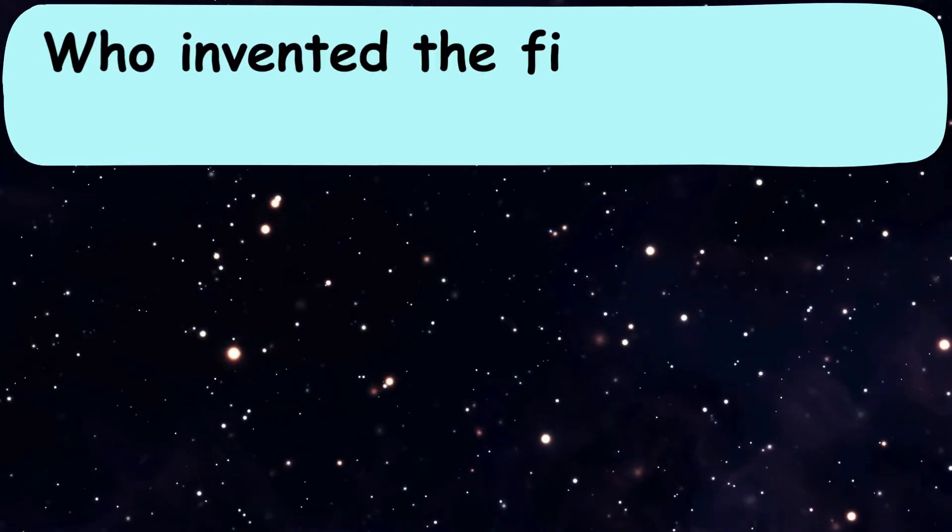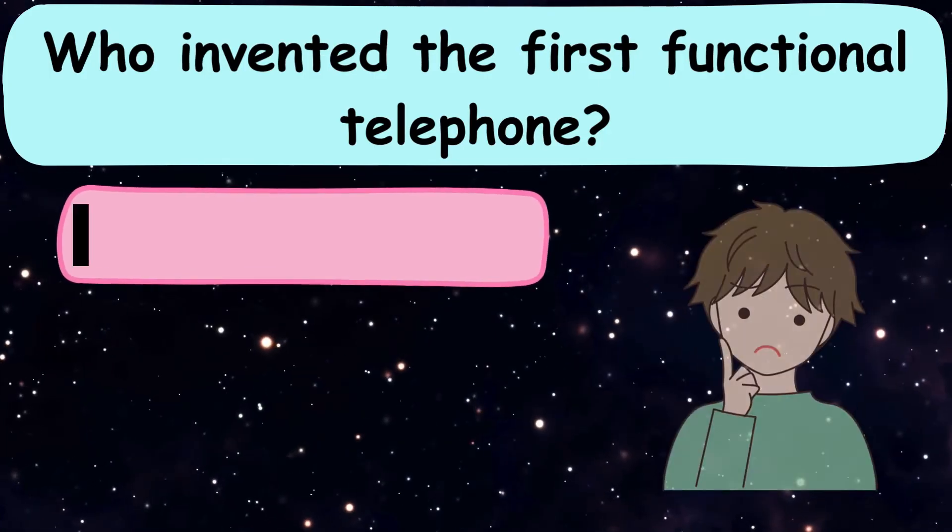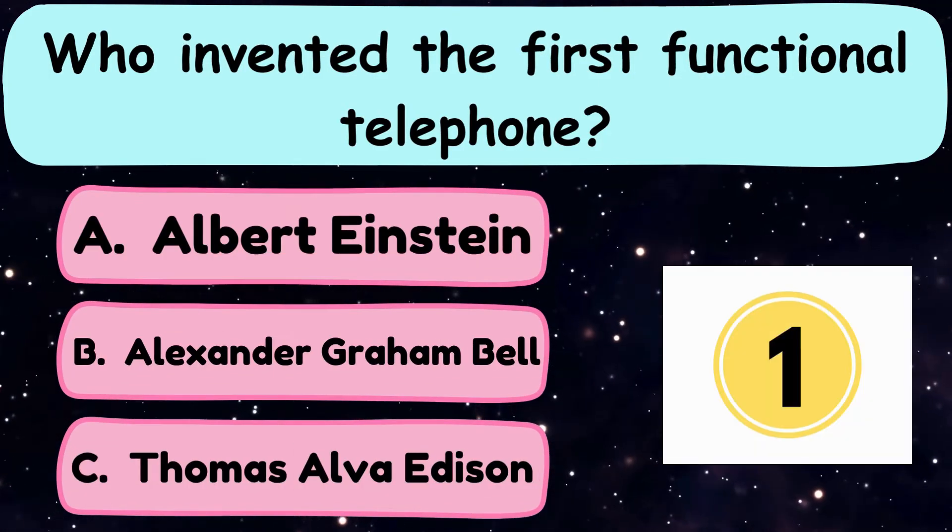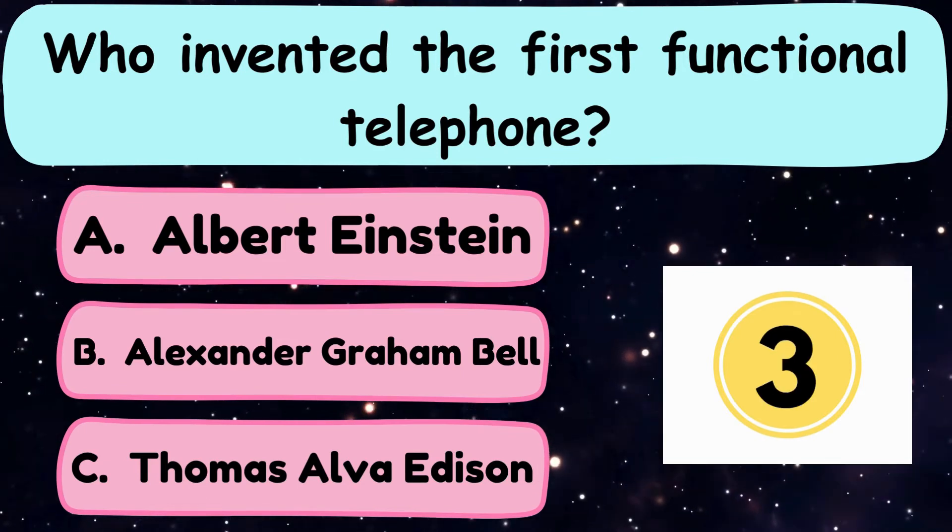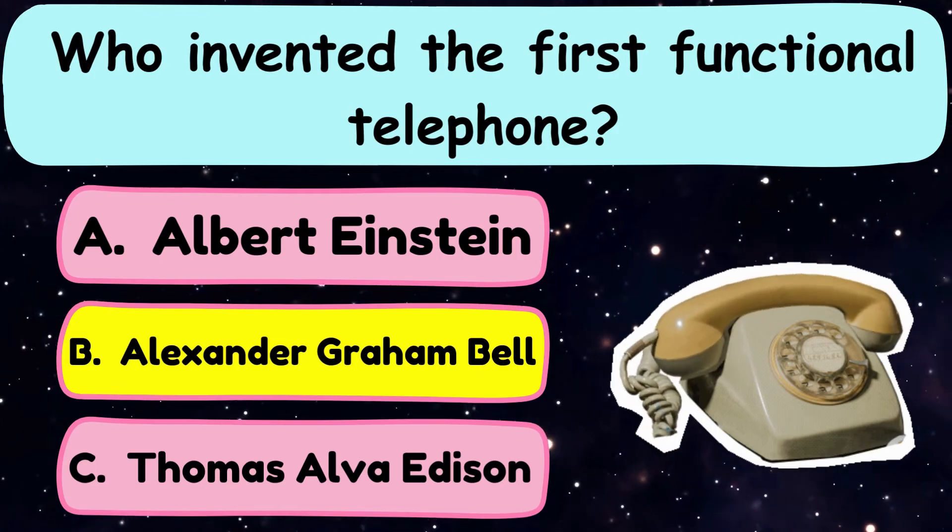Question number 24. Who invented the first functional telephone? A. Albert Einstein, B. Alexander Graham Bell, C. Thomas Alva Edison? And the correct answer is option B. Alexander Graham Bell.